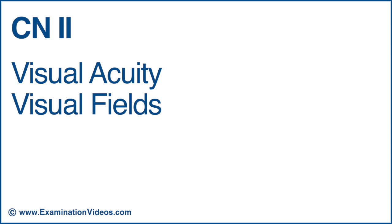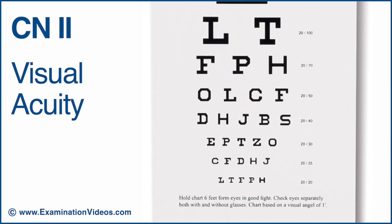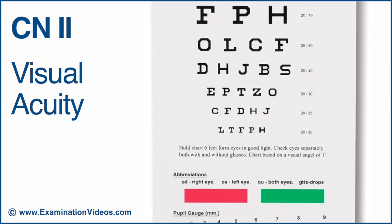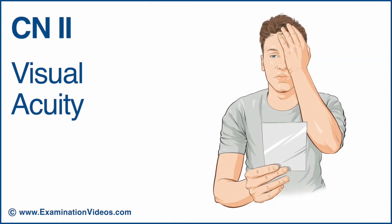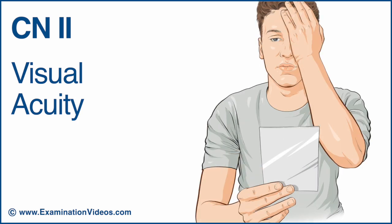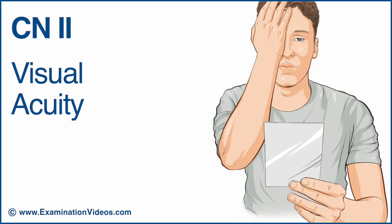To test cranial nerve 2, examine the visual acuity and visual fields. Visual acuity is typically assessed using a Snellen eye chart. This video shows a handheld version of the eye chart being used. Ask the patient to cover the left eye and read aloud the smallest line they are able to read. Repeat with the other eye.